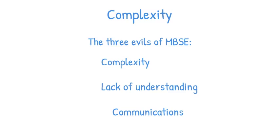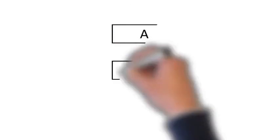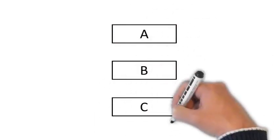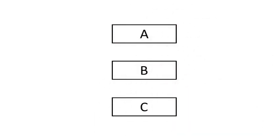The first thing we need to understand is actually the nature of complexity. To do that, let's consider a simple hypothetical system that comprises three things: A, B, and C. It doesn't really matter what these three things are — they could be systems, organisations, people, or requirements. Let's imagine for the moment that they're requirements: A, B, and C each represent a requirement.